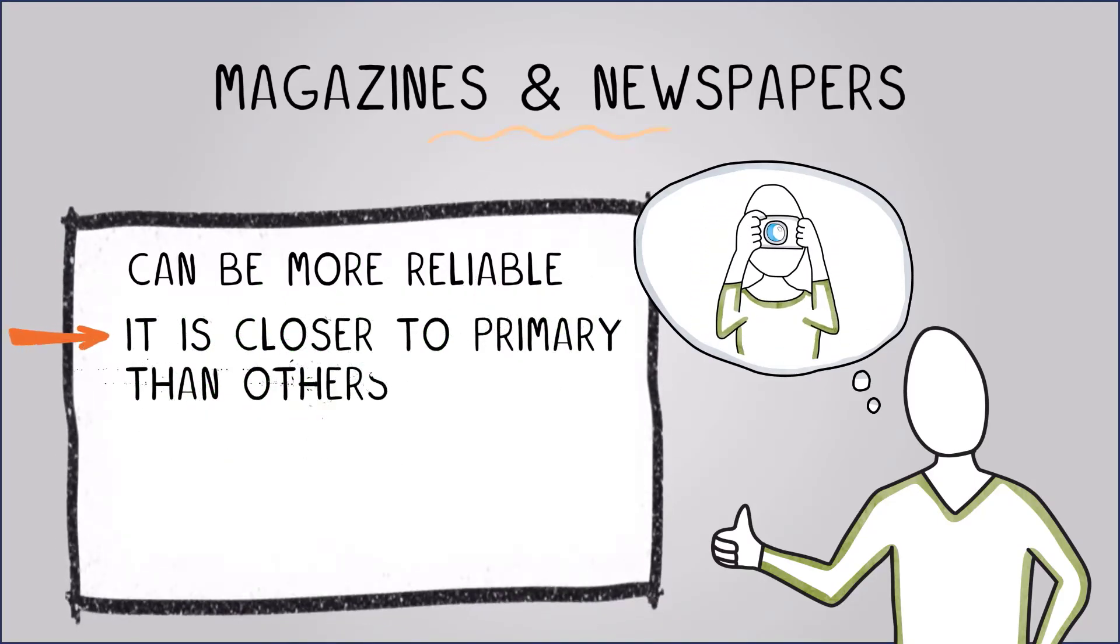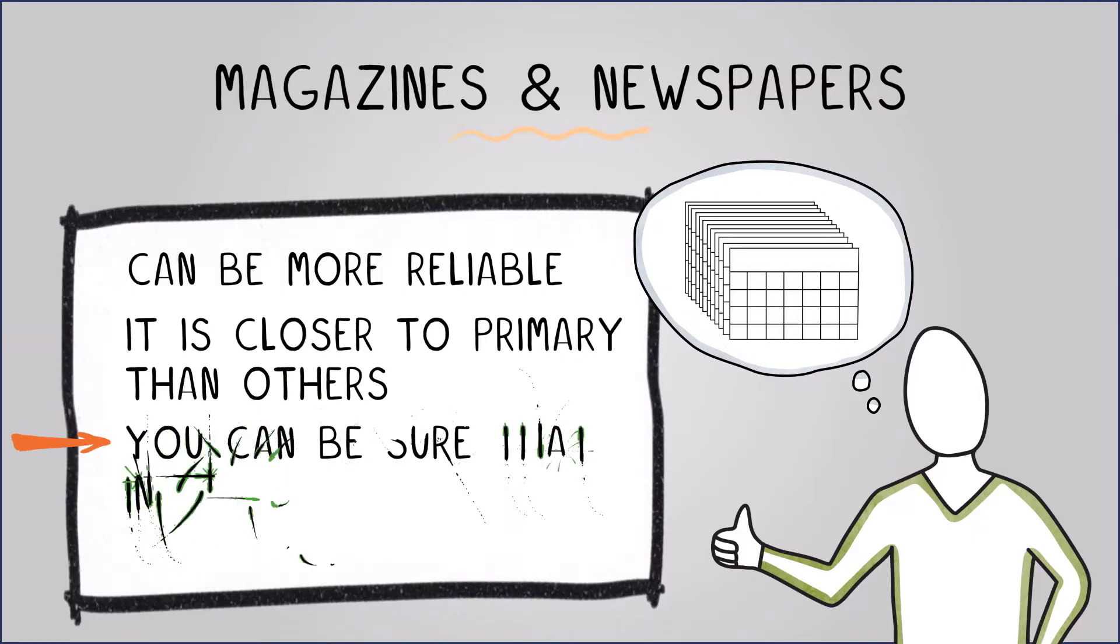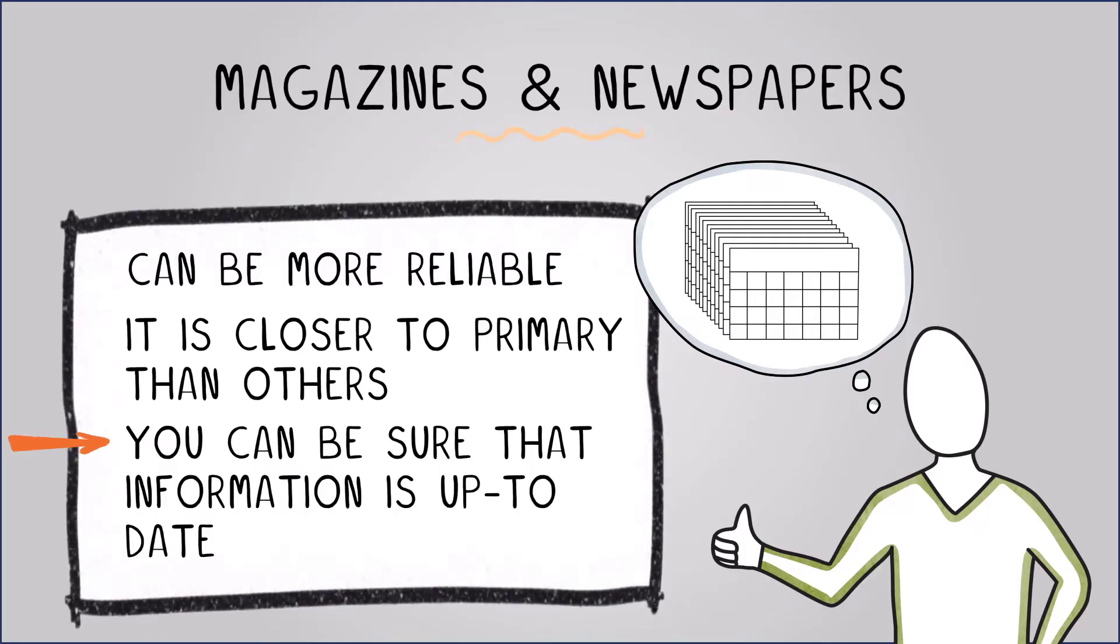The journalist who writes the article may be a first-hand witness of an event and so while this may be a secondary source is closer to primary than others. And newspapers and magazines are dated so you can be sure that information is current and up-to-date information on recent news and events.